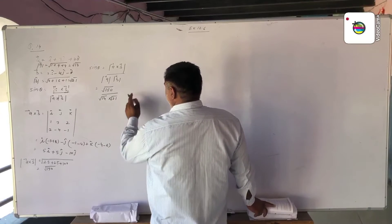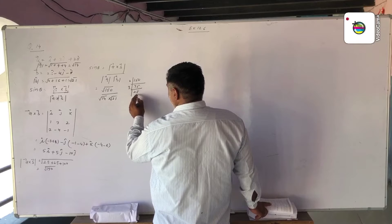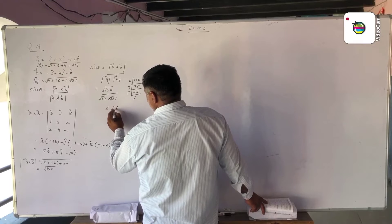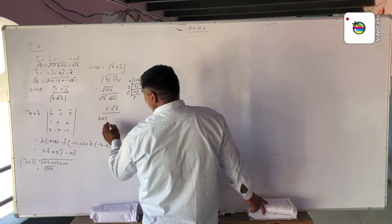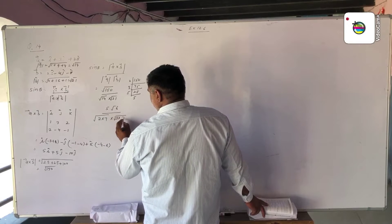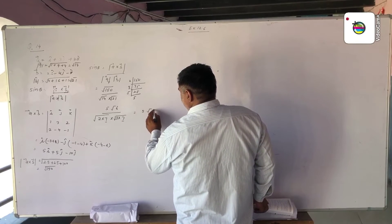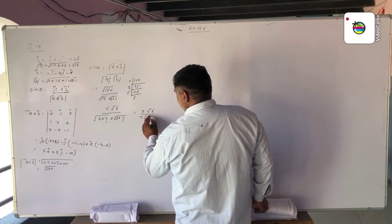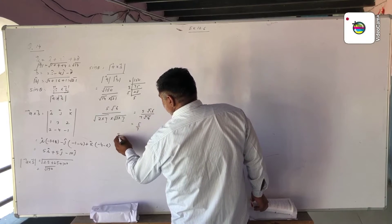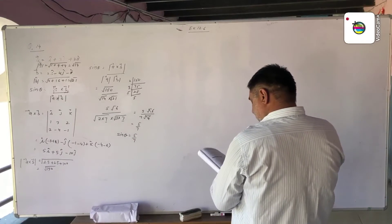We factorize 150: 150 divided by 2 gives 75, divided by 3 gives 25, which is 5 times 5. So the square root of 150 equals 5 root 6. The denominator becomes the square root of 2 times 7 multiplied by the square root of 3 times 7, which simplifies to 7 root 6. The root 6 terms cancel, giving sine theta equal to 5 upon 7.